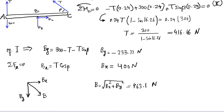The last equation is ΣFx = 0, so Bx equals T·cos(β), giving Bx equals 400 Newtons.